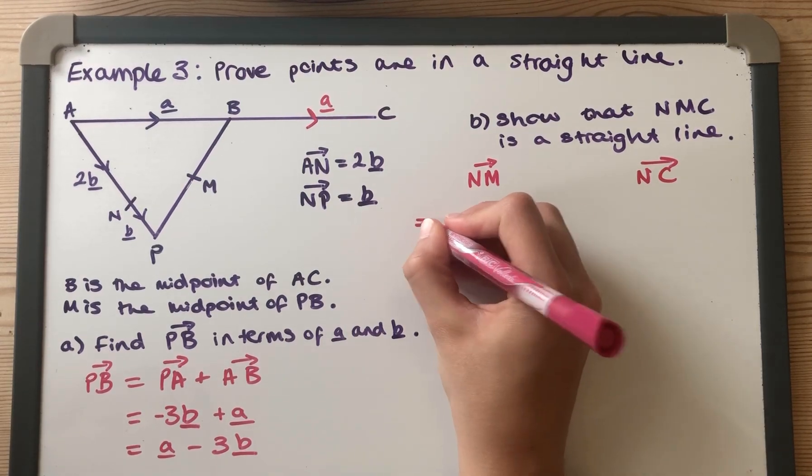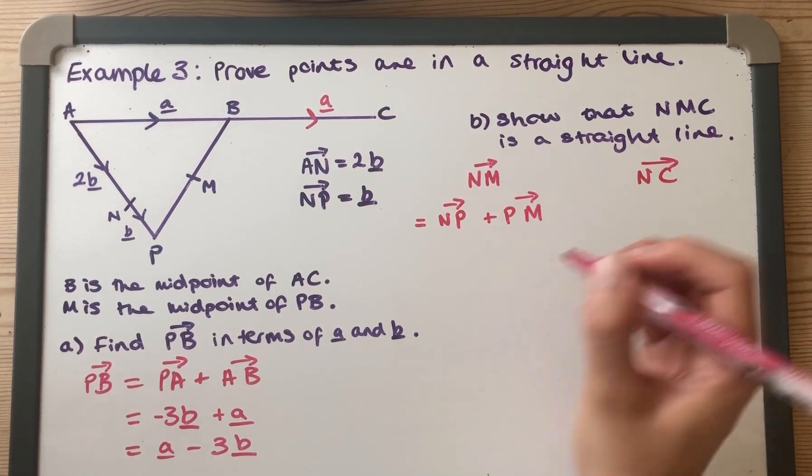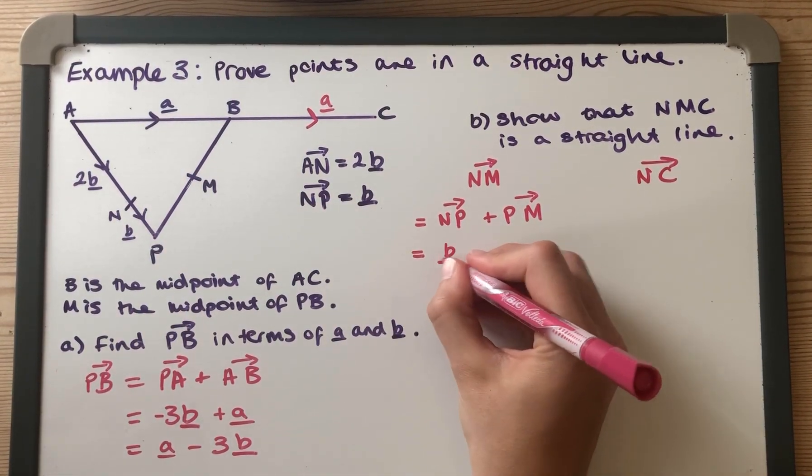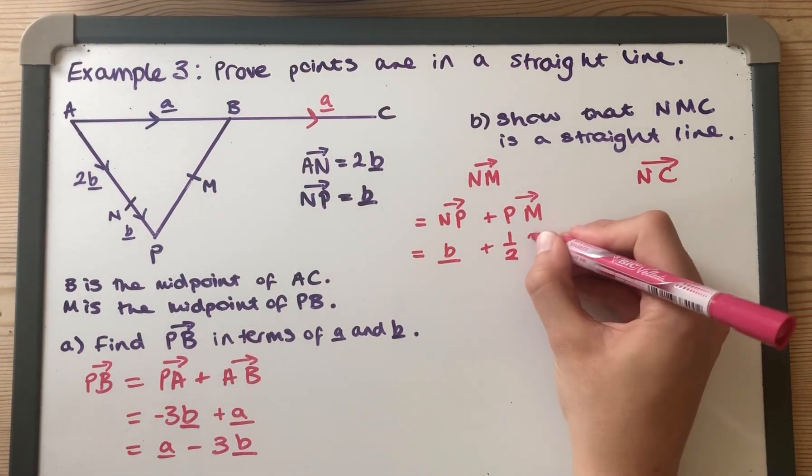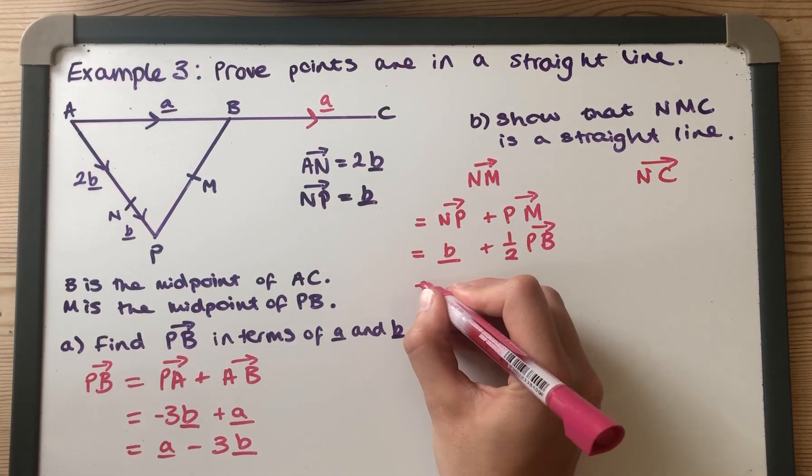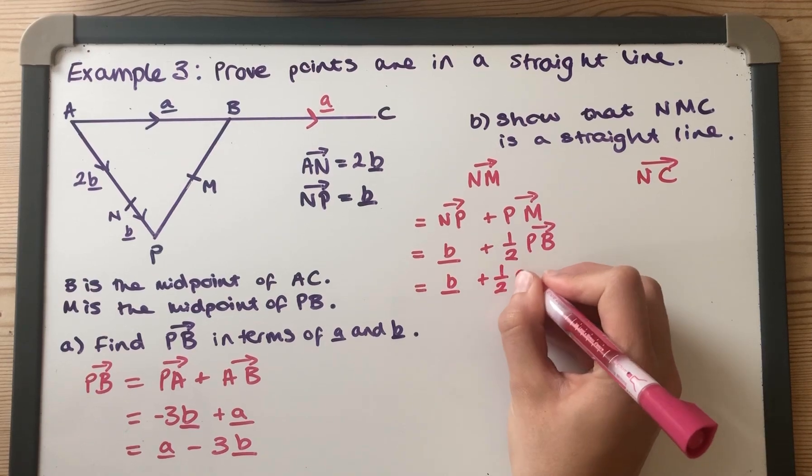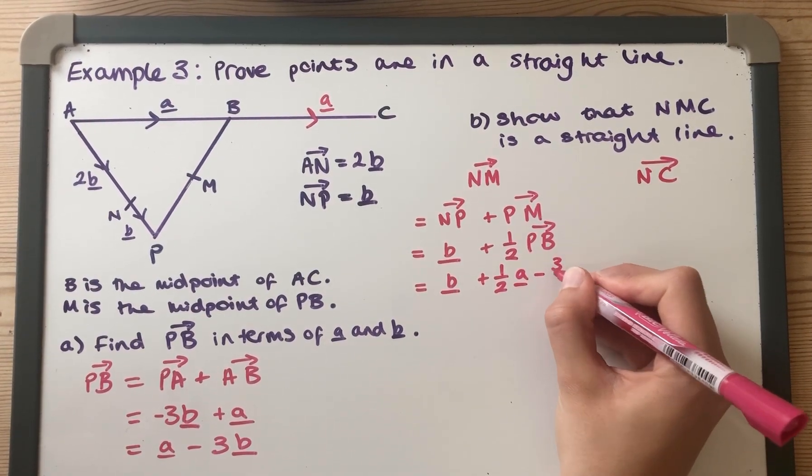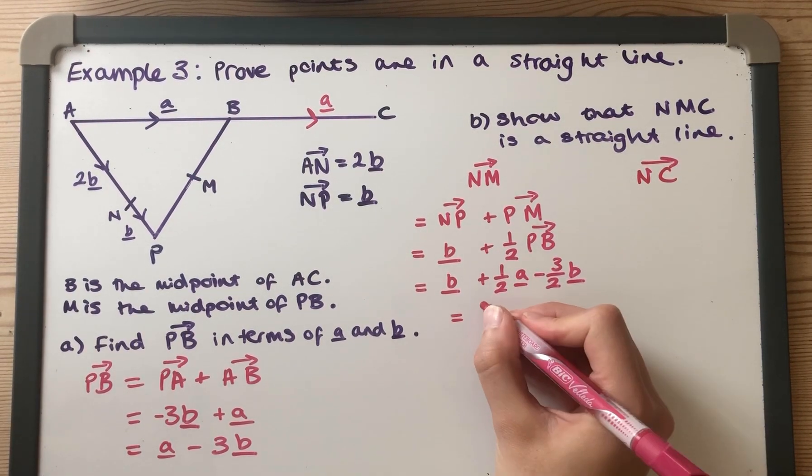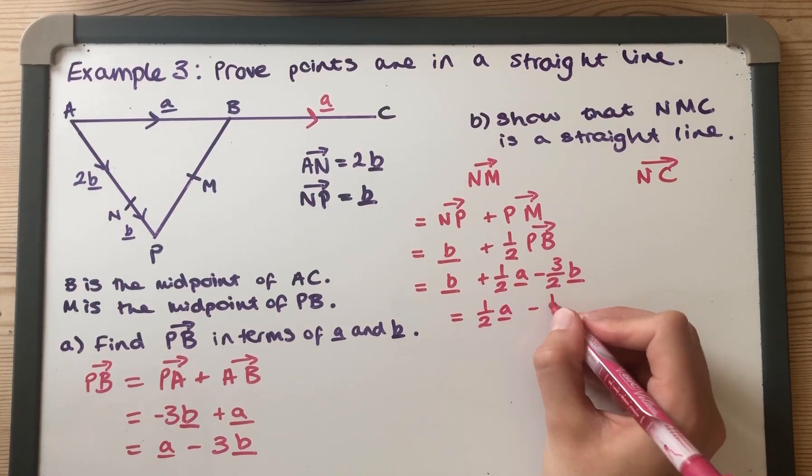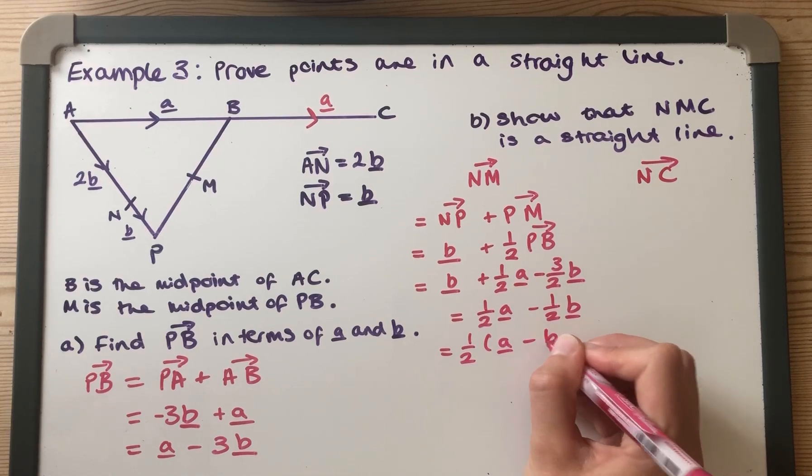So I am going to go that N, M is going from N to P and then adding on P to M. So N to P is easy, that's just B. P to M is half of P to B, and we worked that out last time. P to B was A minus 3B, so that's B plus a half A minus 3 over 2B. So overall that means we're getting a half A minus a half B. Actually we could just write as take out the factor of a half, we've got half A minus B.